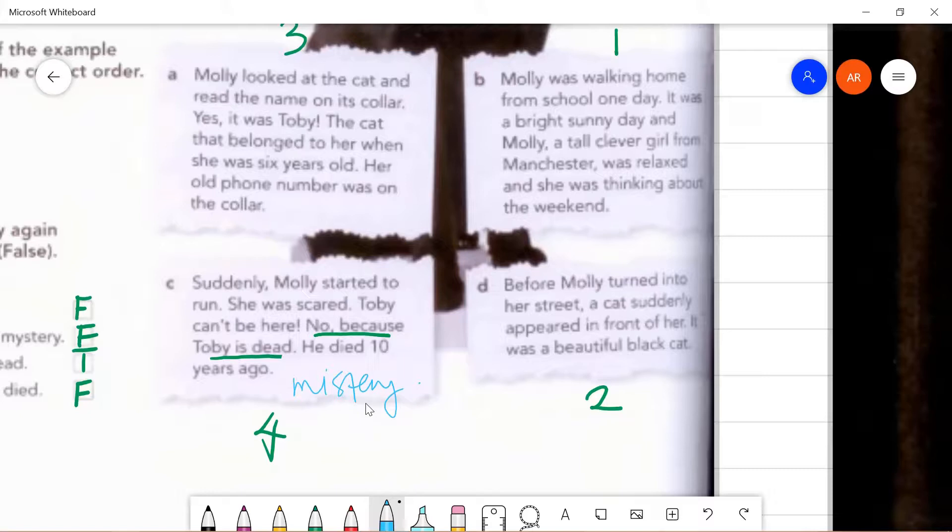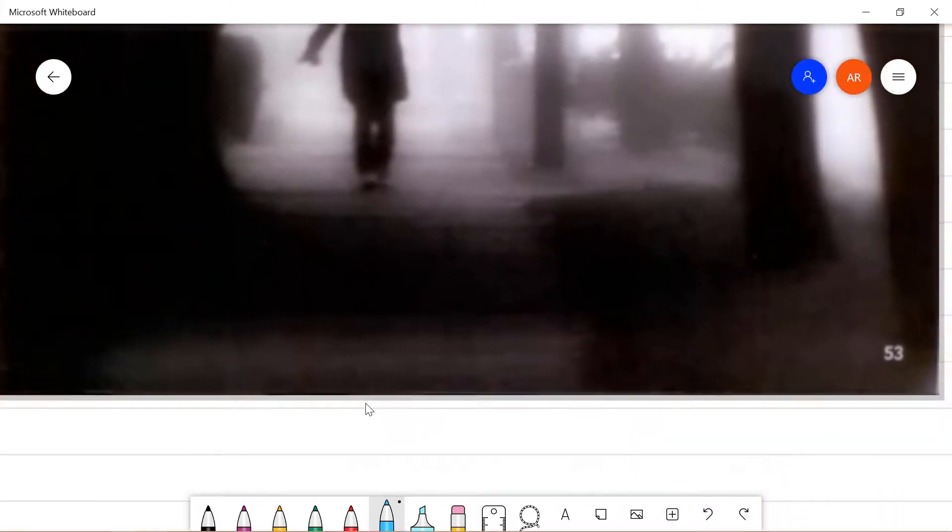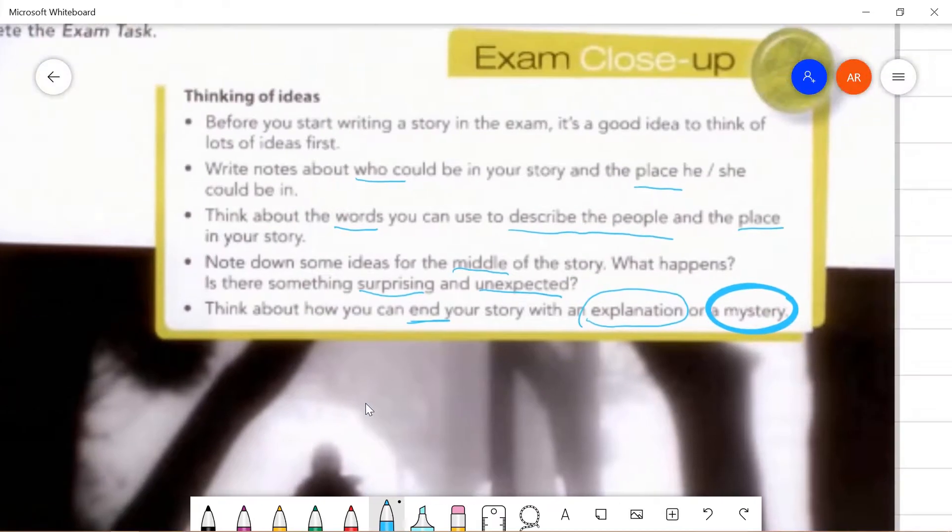Why do I say so? Because it doesn't have a closure, right? Toby is dead. He died 10 years ago. The writer leaves you with a hanging ending. It leaves you with questions. So, you as a reader, you will make up your own conclusion. Right. Up to you. So, that's what it meant by mystery.